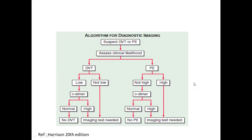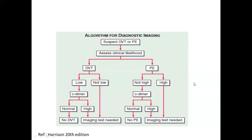The Wells score considers variables including whether the patient has cancer, has been bedridden for more than three days, has leg swelling or pitting edema, clinical signs like heart rate, and whether the patient has hemoptysis. For DVT: if the score is low, order a D-dimer; if normal, DVT is excluded and you look for other causes of leg swelling. If D-dimer is elevated, proceed to imaging. If the score is not low, go directly to imaging. For suspected PE: if Wells score is not high and D-dimer is normal, PE is excluded; if D-dimer is elevated, proceed to imaging.